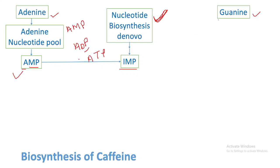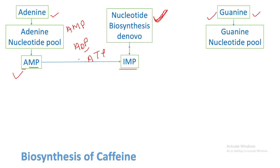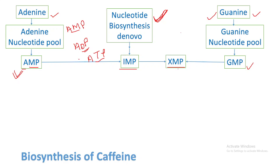For guanine: guanine also enters the guanine nucleotide pool, which contains guanosine monophosphate (GMP), guanosine diphosphate (GDP), and guanosine triphosphate (GTP). Among these, the raw material for caffeine synthesis is guanosine monophosphate — analogous to adenosine monophosphate in the adenine pathway. This guanosine monophosphate first gets converted into xanthosine monophosphate (XMP).